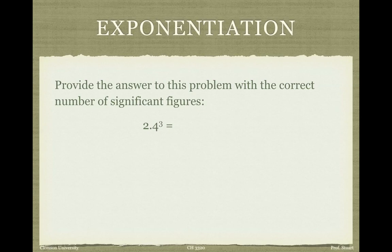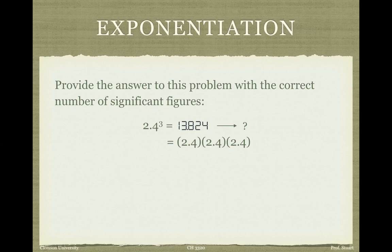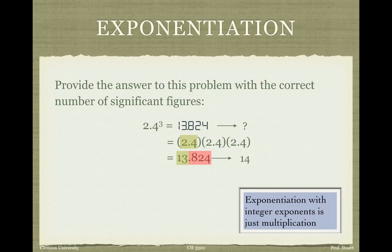Exponentiation gets slightly more complicated. When the exponent is an integer, it's not that difficult — exponentiation is just repeated multiplication. For example, 2.4 raised to the third power: the calculator gives 13.824. Since 2.4 has two sig figs, we round the final answer to two sig figs, giving 14. So with integer exponents, it's just like multiplication — the number of sig figs in your base number is the number of sig figs in your final answer.